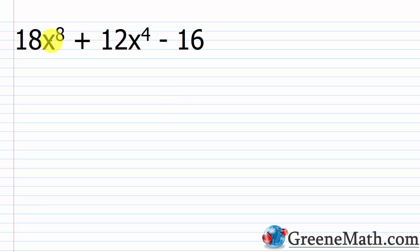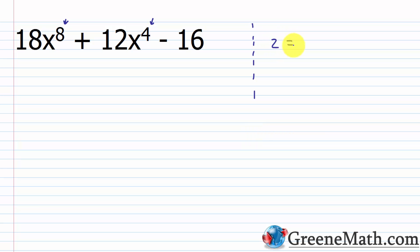We have 18x to the eighth power plus 12x to the fourth power minus 16. Since this exponent 8 is double that of the 4, I'm going to be able to use a substitution technique. I can say that a variable, let's say z, is equal to x to the fourth power — the variable raised to the smaller power.